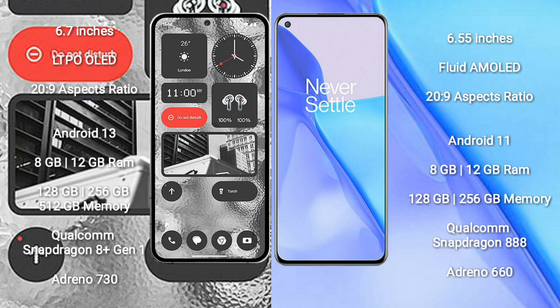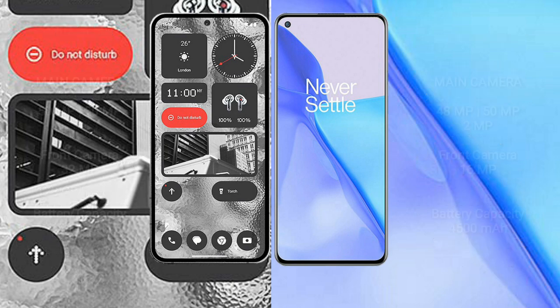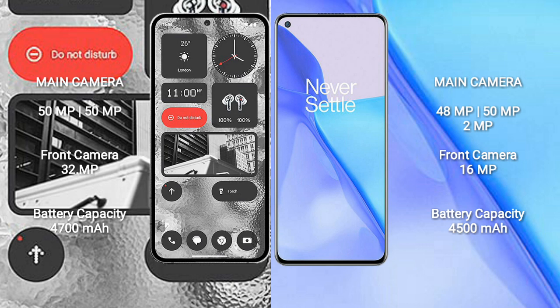Nothing Phone 2 comes with 8GB or 12GB RAM and 128GB, 256GB, or 512GB internal storage, with a Qualcomm Snapdragon 8 Gen 1 processor and GPU Adreno 730. OnePlus 9 comes with 8GB or 12GB RAM and 128GB or 256GB internal storage, with a Qualcomm Snapdragon 888 processor and GPU Adreno 660.